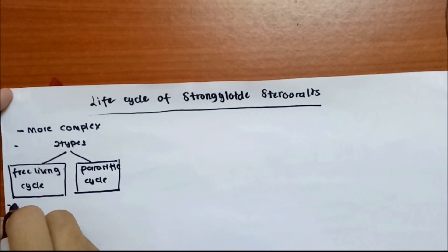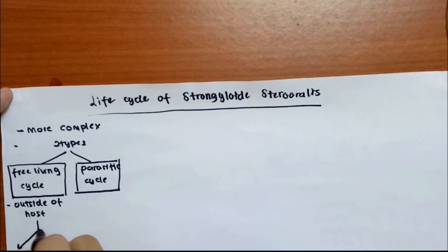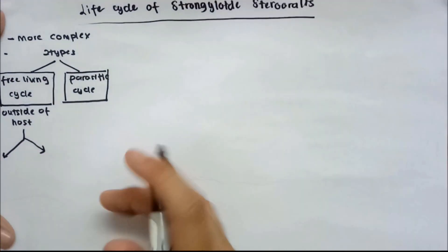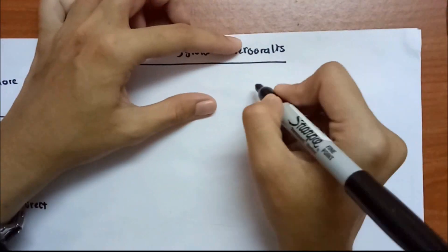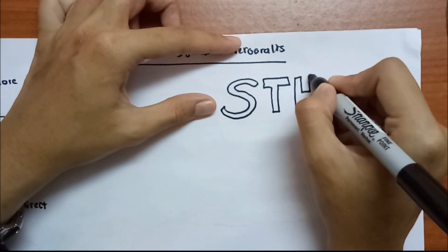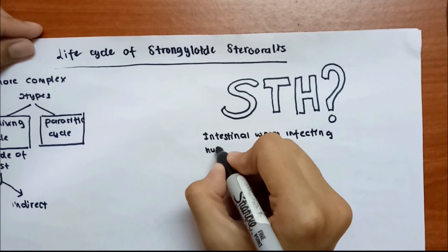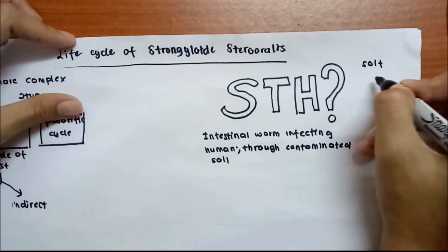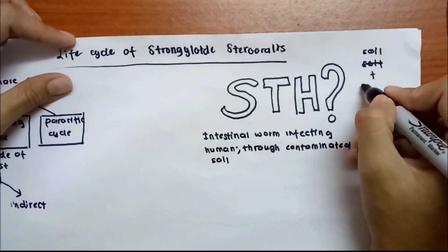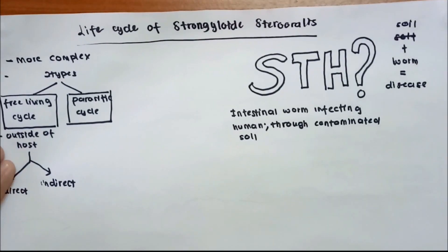Under the free living cycle, it occurs outside of the host body, and there are two routes or pathways — the direct route and the indirect route. STH refers to intestinal worms infecting humans that are transmitted through contaminated soil. When there is contaminated soil with the infective stage of Strongyloides stercoralis and a human host, disease caused by this species can occur.